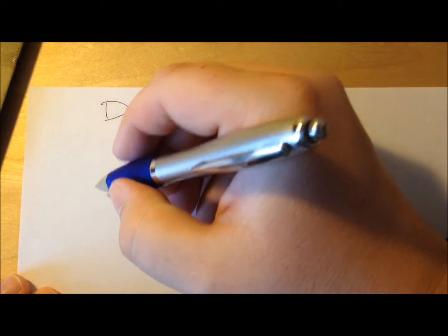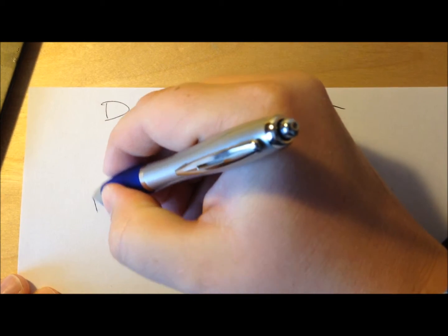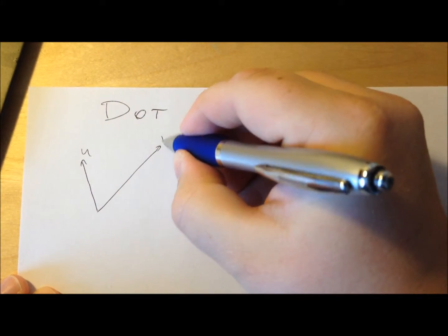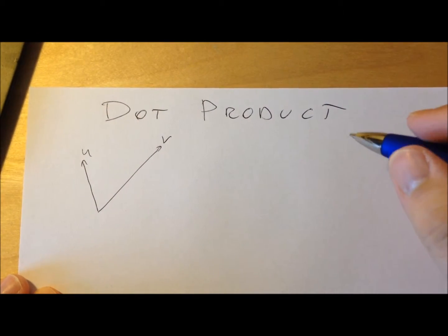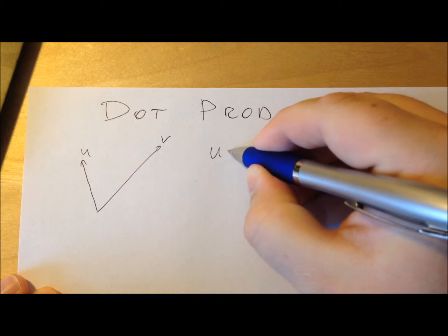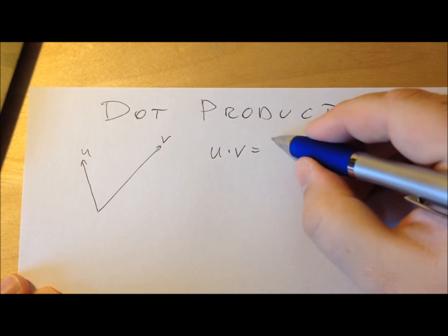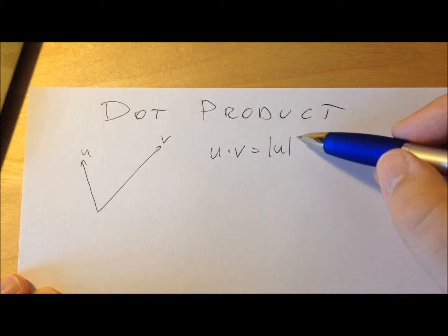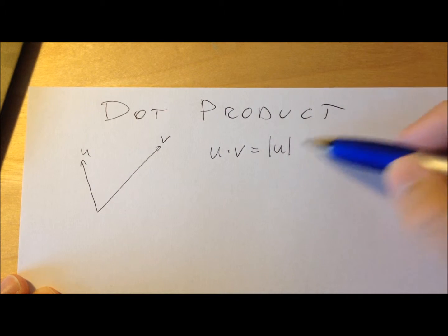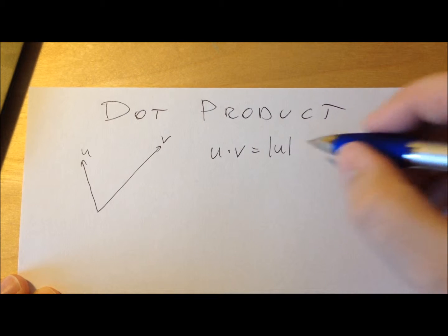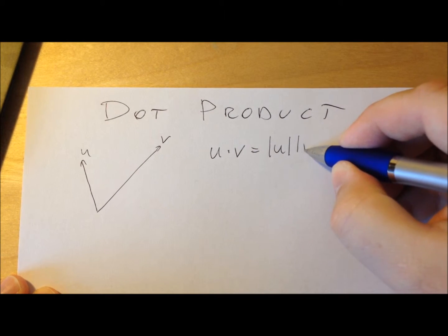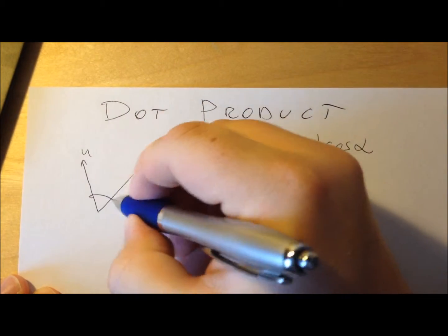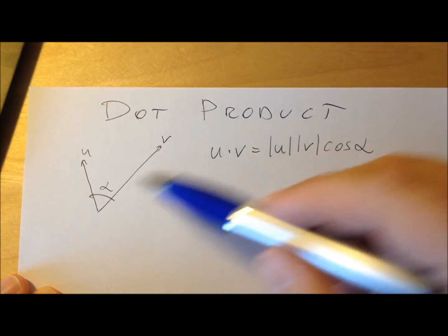Let's start with the definition. If we have two vectors, u and v, then the dot product u·v is equal to the length of vector u — please note that the vertical lines mark the length of the vector — times the length of vector v, times the cosine of the angle between the two vectors.